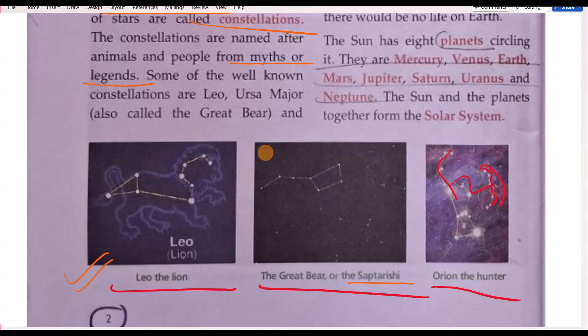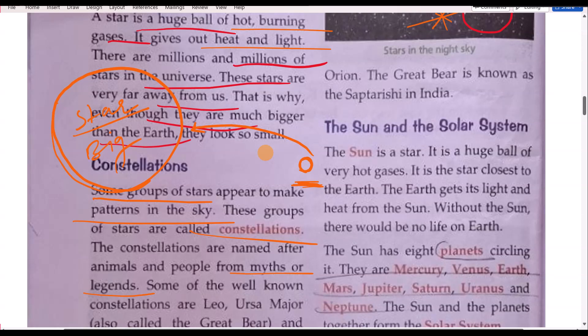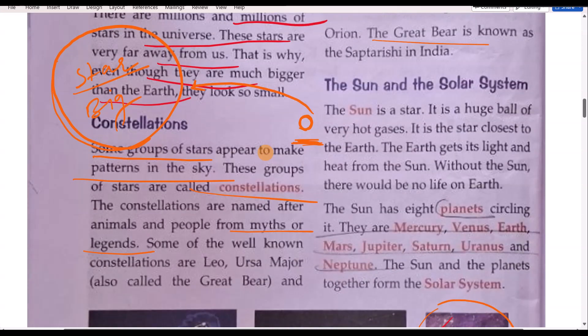The Orion, the hunter. These stars, it looks like a one man hunter, like a person who is hunting. The Great Bear known as the Saptarishi in India. So all over the world, one star name is the Great Bear, but in India that name is Saptarishi, as written in the scriptures.